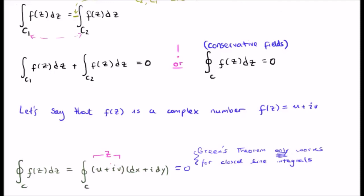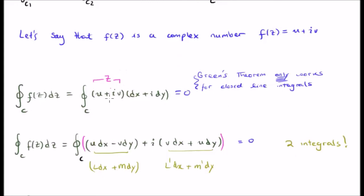As I said in video number two, Green's theorem only works or is only valid for closed curves, closed line integrals. If we multiply these two expressions and group the real and imaginary components, we get u dx minus v dy and v dx plus u dy.